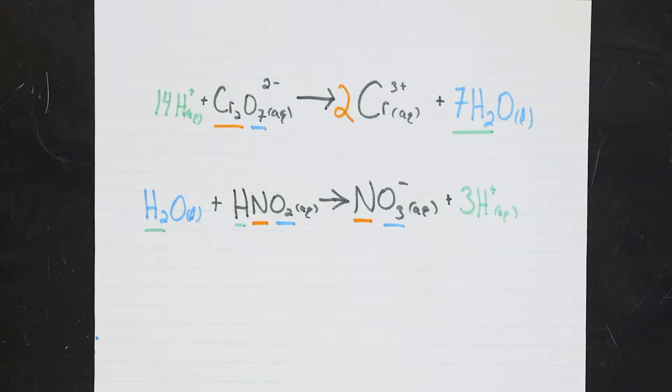In this case, I've got an overall plus 12 charge on the left, and a plus 6 on the right. So I need 6 negatively charged electrons on the left side to balance it out. For the second reaction, I've got an overall neutral charge on the left, and plus 2 on the right. Therefore, the right side needs two electrons to balance out the charge.